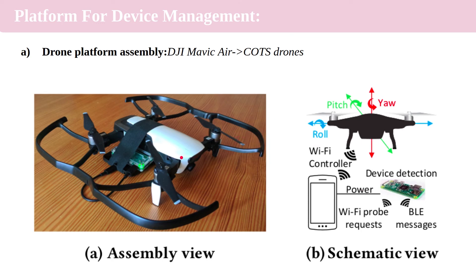The drone has to be as easy as possible to control autonomously. It should be small enough to fly indoors and strong enough to carry, for example, a smartphone or IoT board for device detection. As you can see here, to obtain fully autonomous area exploration, the device detection platform and drone controller fly with the drone, which prevents user involvement and dependency on a ground control station.